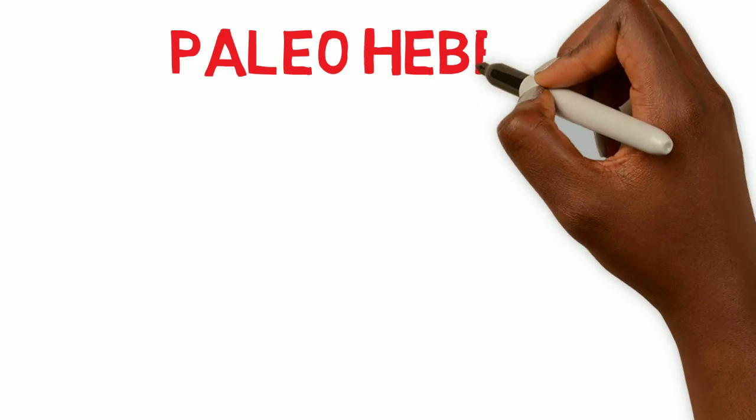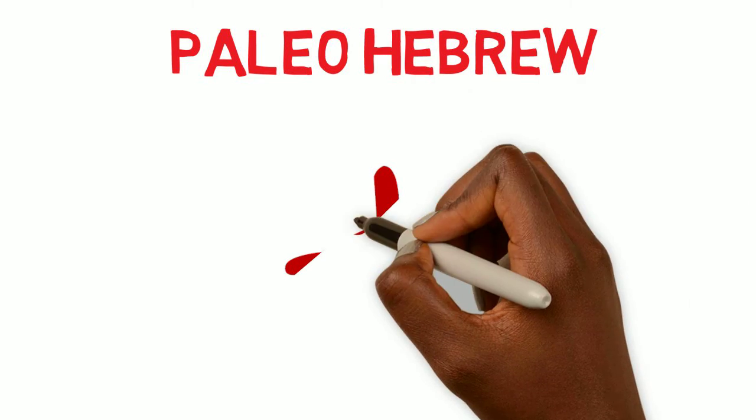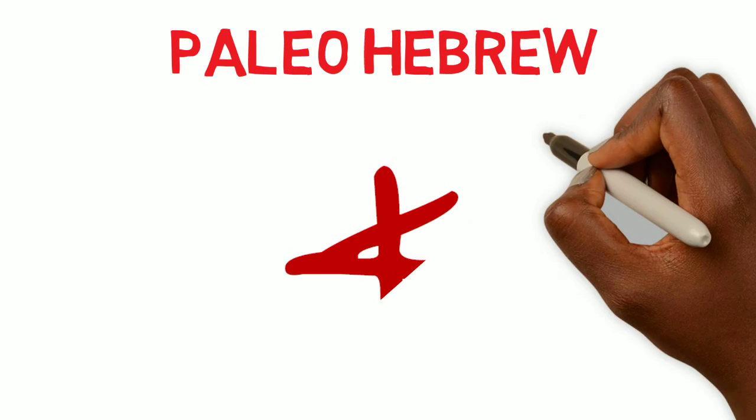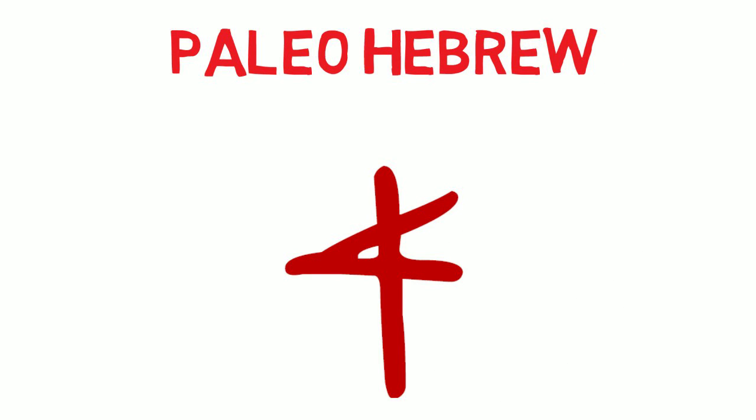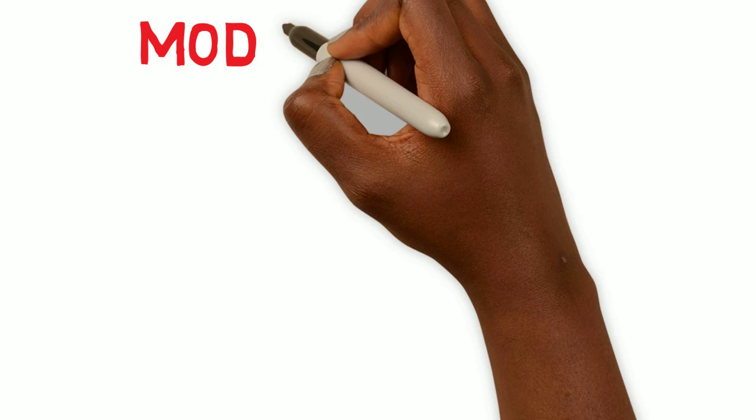Next, we will look at the Paleo-Hebrew. It is written with a straight vertical line with two lines going across, so it kind of looks like a vertical straight line with a side V. And this is how you would see the Paleo-Hebrew written for Aleph.